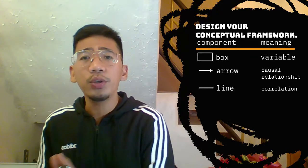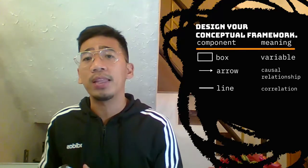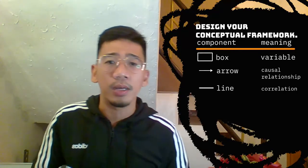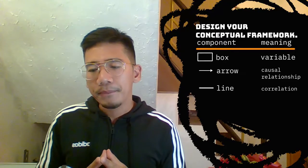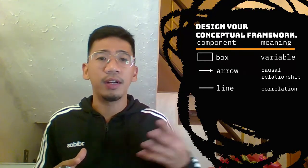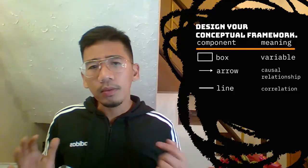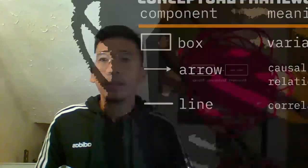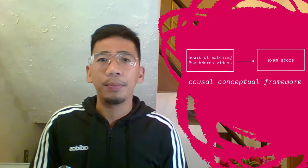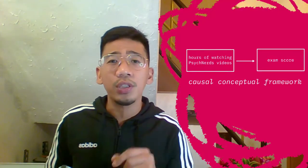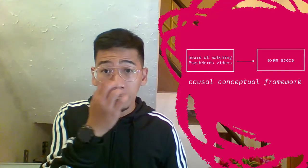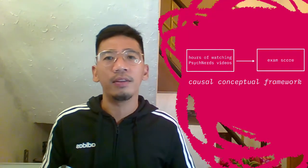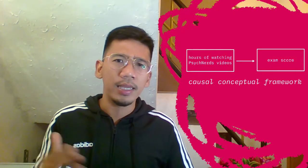You should use a line when you expect a correlation between two variables but not a cause and effect relationship. Each component actually means something: words inside boxes indicate that they are variables, arrows connote causal relationships, and lines connote correlations. To indicate a causal relationship, each arrow should start from the independent variable — in this case, hours of watching Psych Nerds videos — and point to the dependent variable — in this case, exam scores.